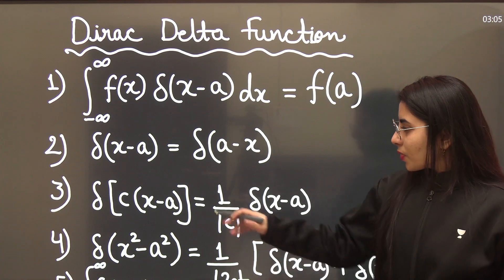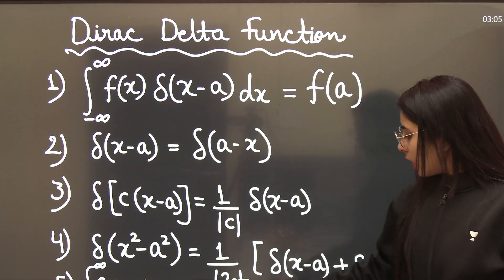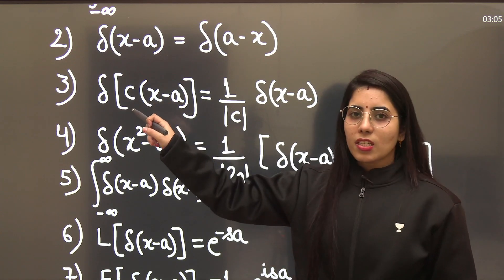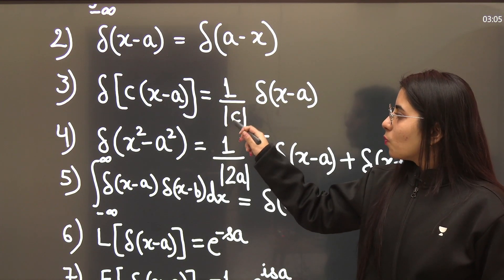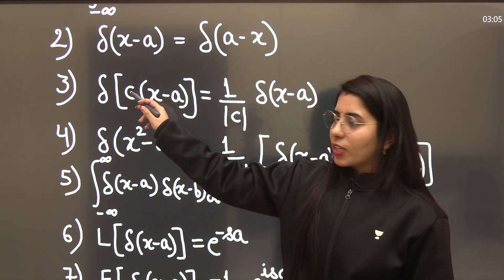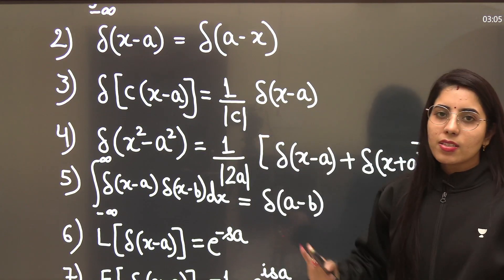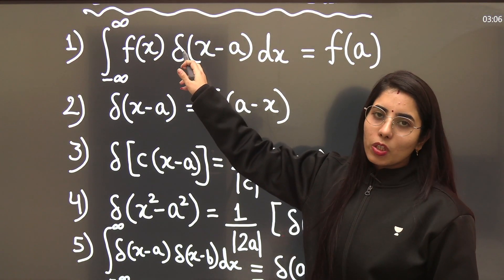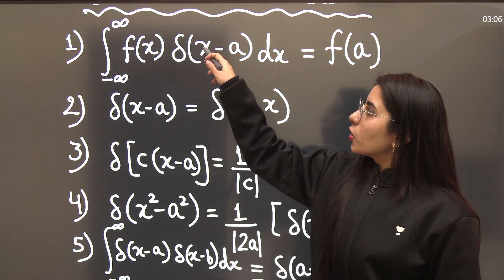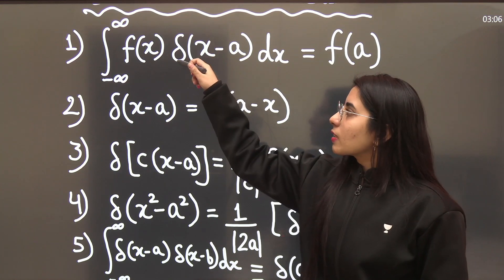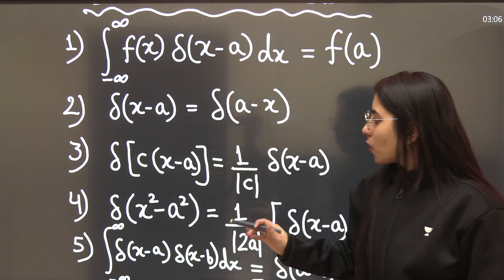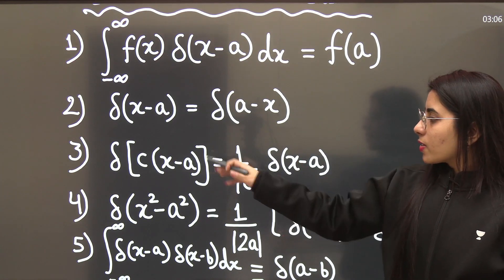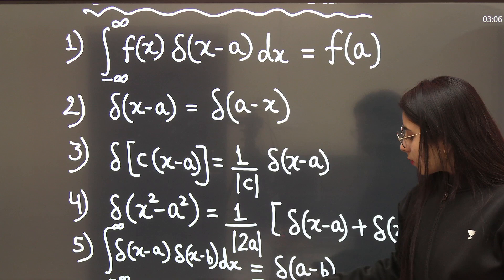The third property: if you have a constant term present, that is δ(cx−a) where c is a constant, you simplify it by writing 1 over |c| — the magnitude of c — times δ(x−a). This is important because sometimes an expression has a constant as the coefficient of x, and you need to make that coefficient 1 by taking the constant common. When you do that, you apply this third property to simplify the form.